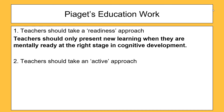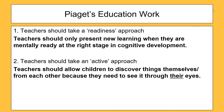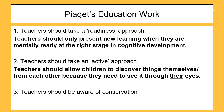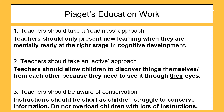The second thing Piaget suggested is that teachers should take an active approach. This is the idea that teachers should allow children to discover things themselves or from each other, because they need to see it through their own eyes — that's because they're egocentric. It's no good standing in front of a five-year-old telling them how to do something; they need to discover and do it themselves. The final thing is that teachers should be aware of conservation, meaning children can't hold information for very long, so instructions should be short. Don't overload children with lots of information and instructions.